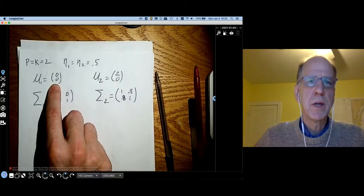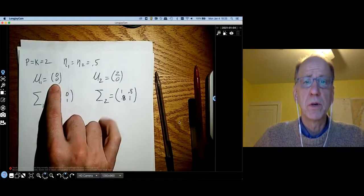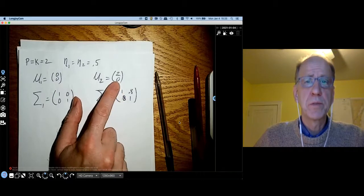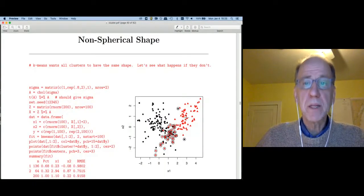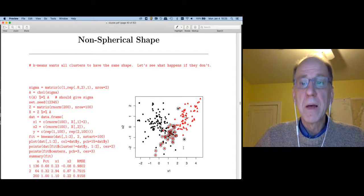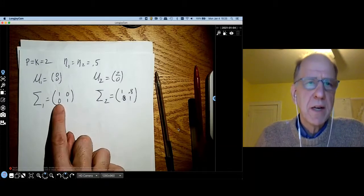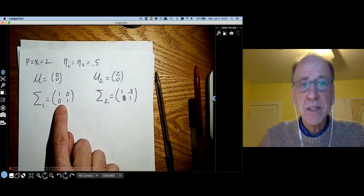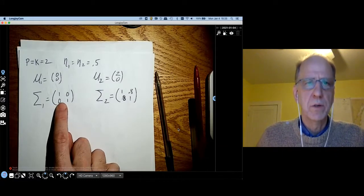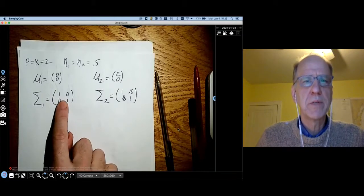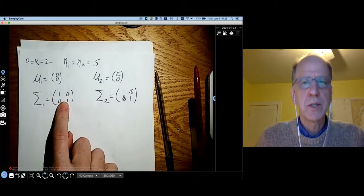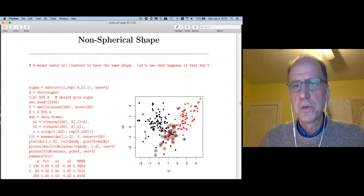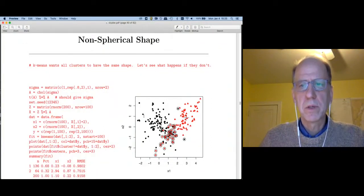In this case the black and the red distributions have equal probability of occurring. One distribution has true mean 0,0 and the other one has true mean 2,1. The mean of the black distribution is off at 0,0. The mean of the red distribution is centered at 2,0.